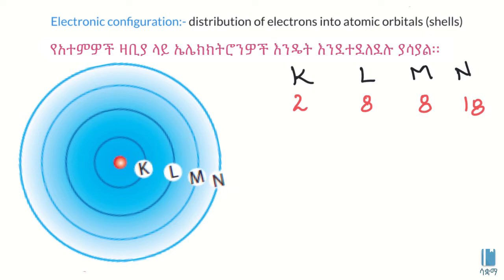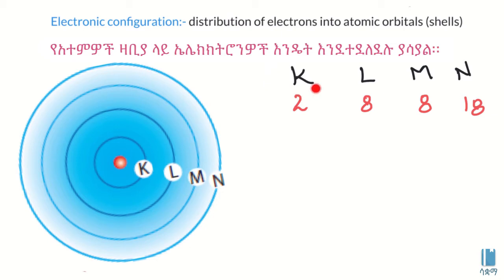The center of the atom is the nucleus, containing neutrons and protons. The outer part of the atom contains electrons. These electrons are arranged in shells: K, L, M, and N shell. Each shell holds a minimum and maximum number of electrons.